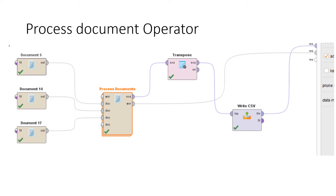When doing text analysis, once you've read in all your documents — and if you're reading from multiple documents, make sure you give each one a proper name — you then have to process those documents. Transpose is optional if you want to view your results better, and you can also write the output to a CSV file. But the most important thing I want to show you is the Process Document token operator.